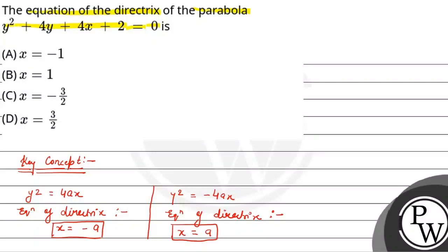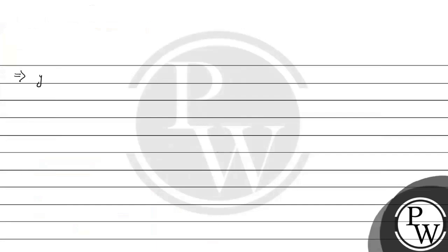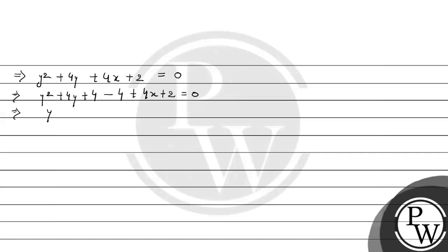Now we can solve the question. We have the equation y squared plus 4y plus 4x plus 2 equals 0. We can rewrite this as y squared plus 4y plus 2 equals 0, and we can use y plus 2 to complete the square. So we get y plus 2 squared, with 4x minus 4 plus 2 equal to 0.